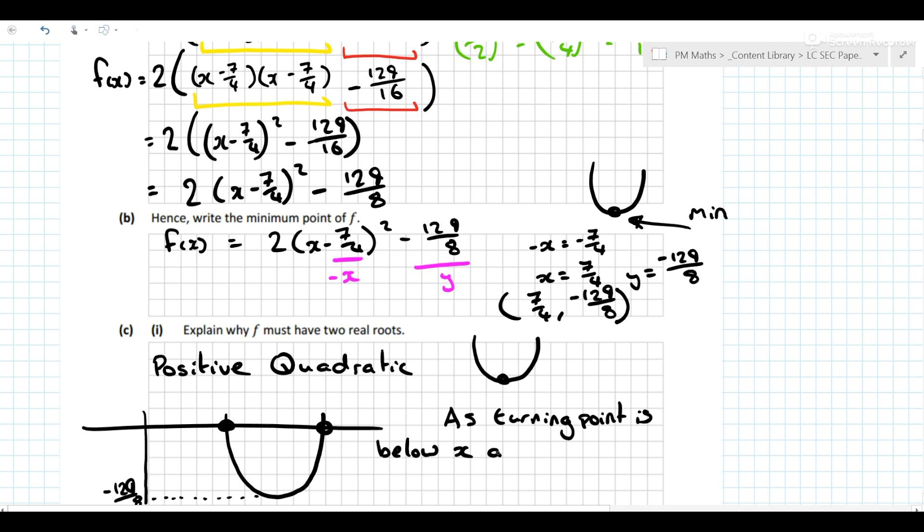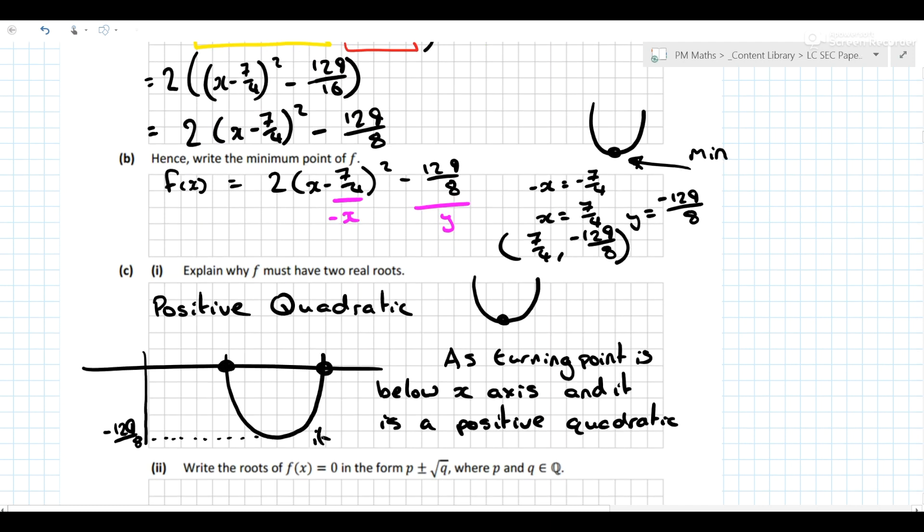So as the turning point is below the x-axis and it is a positive quadratic, it must have two real roots.